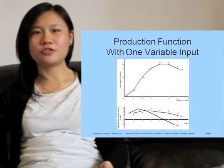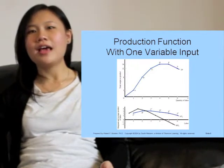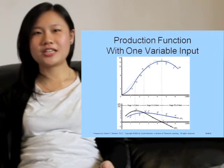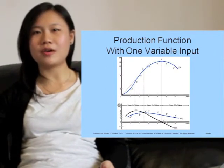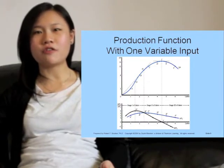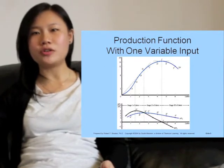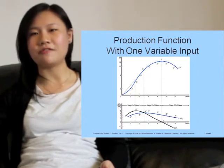The top panel shows the total product of labor curve, and the bottom panel shows the marginal and average product of labor curves. Stage one of production for labor corresponds to the rising portion of the APL. Stage two covers the range from maximum APL to where the MPL is zero. Stage three occurs when MPL is negative.